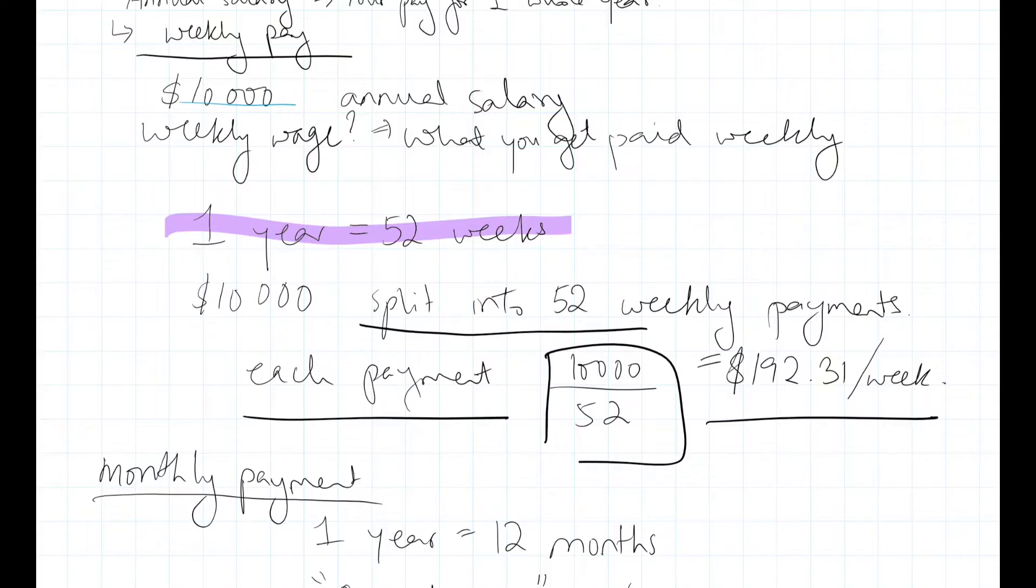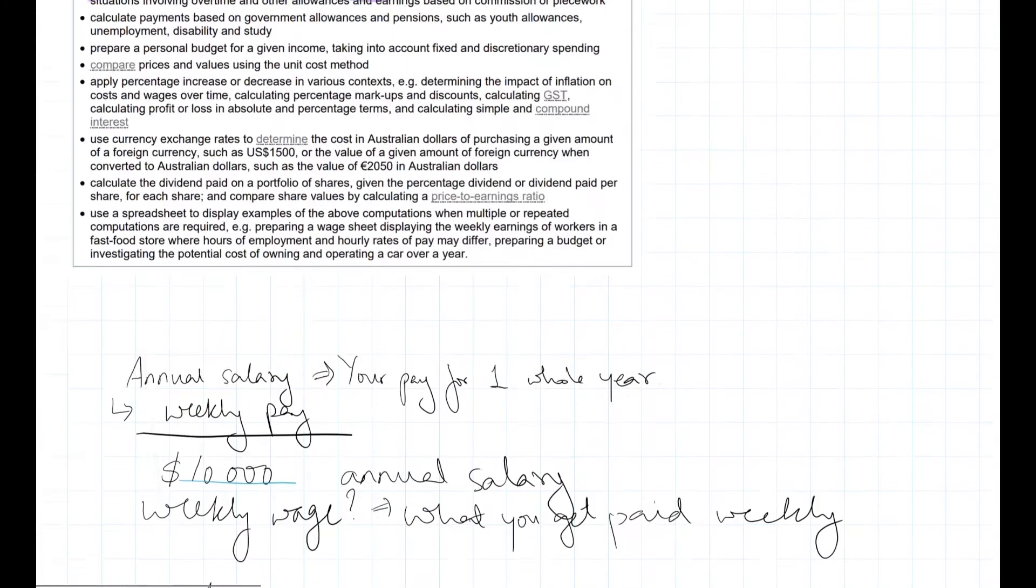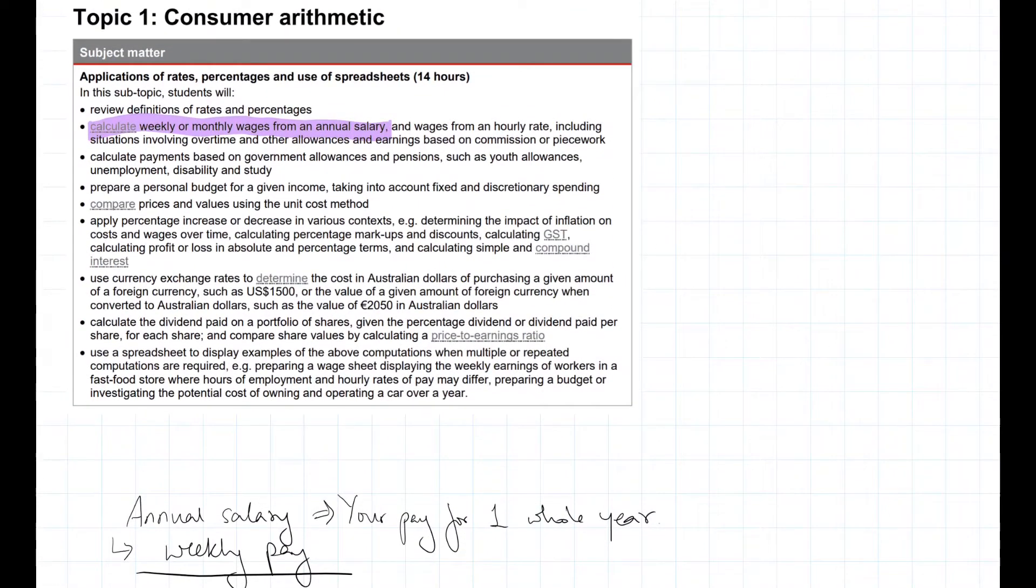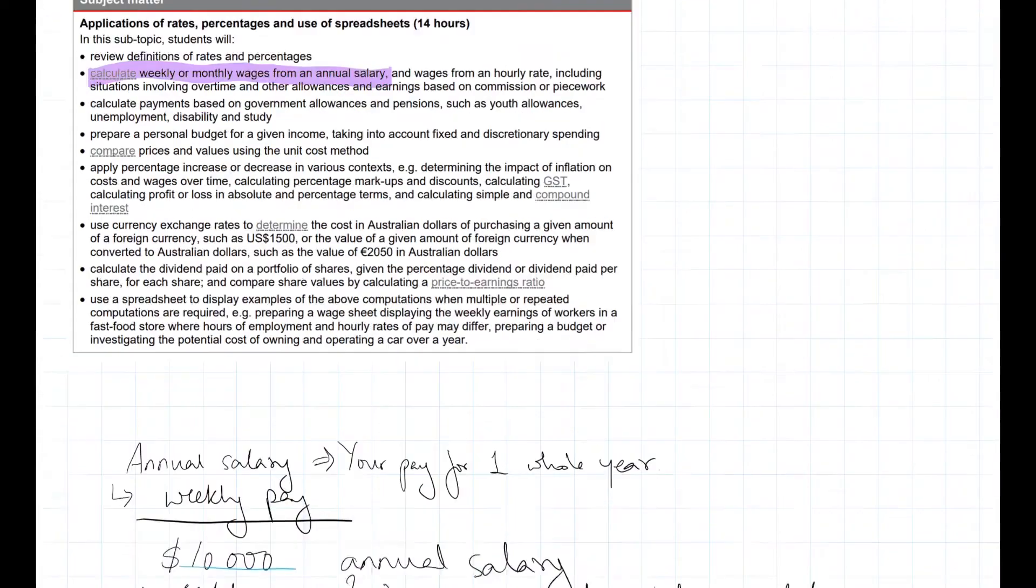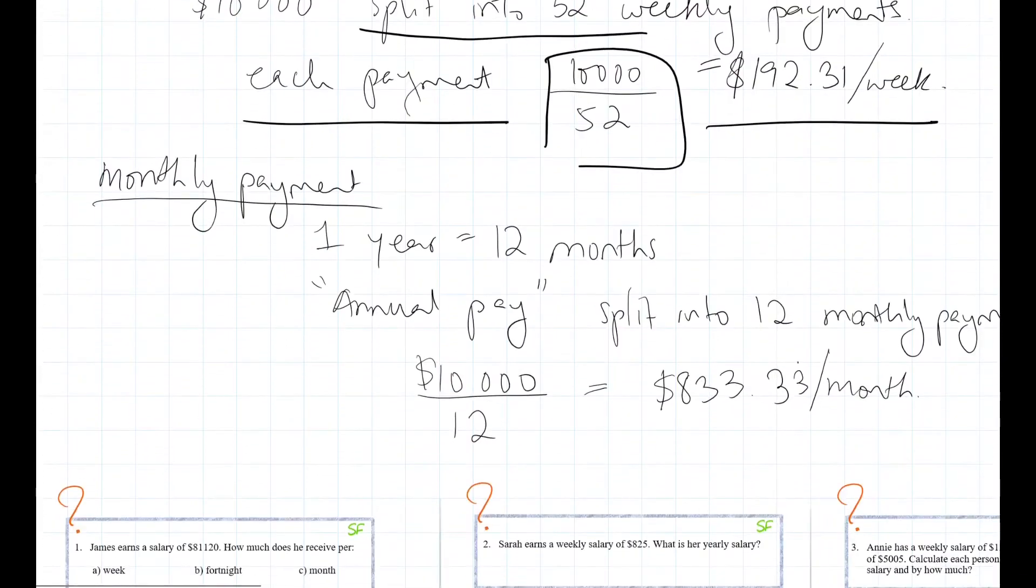Now the second part of this is calculating your monthly wages from an Annual Salary. So the same thing you would have to remember that there are 12 months in one year.